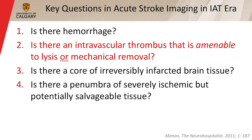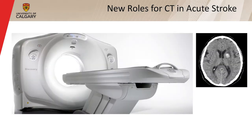Moving into the intra-arterial therapy era, the key questions are: is there hemorrhage? Is there an intravascular thrombus amenable to lysis or mechanical removal? Is there a core of irreversibly affected brain tissue? And is there a penumbra — severely ischemic but potentially salvable tissue? At our institution, like many others, these questions are now answered by CT. I think it's important to understand how this is done in clinical practice, as it can impact how we approach this in MR.